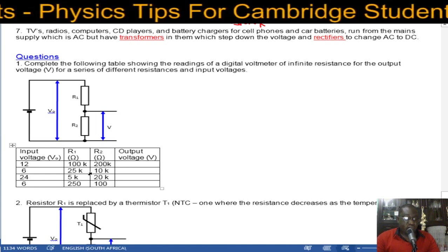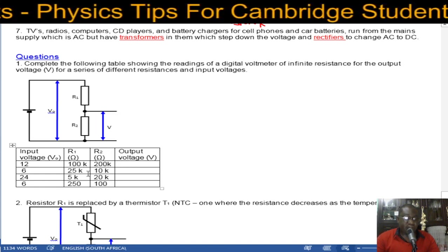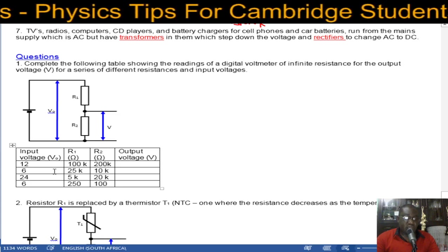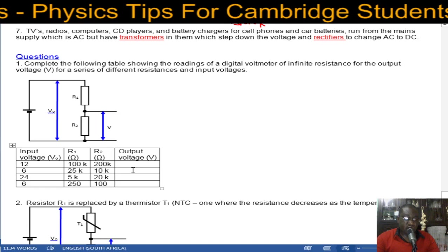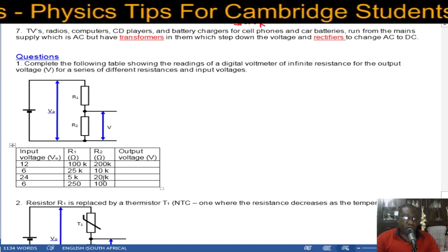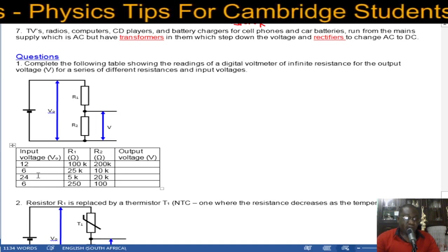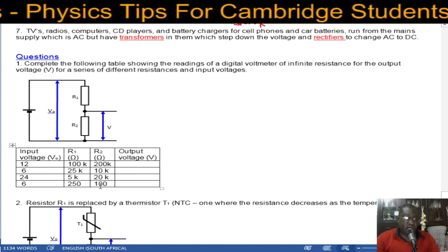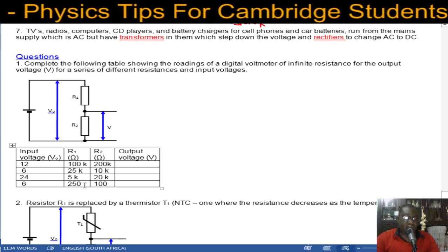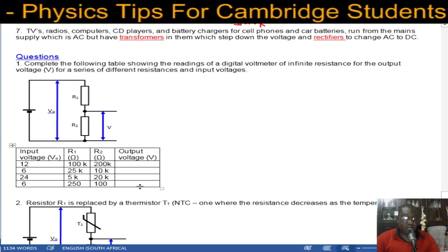For this one, it will be 10 over 35 times 6. This one will be 20 over 25 times 24. That will get your output voltage. And this one 100 over 350 times 6 to get that.